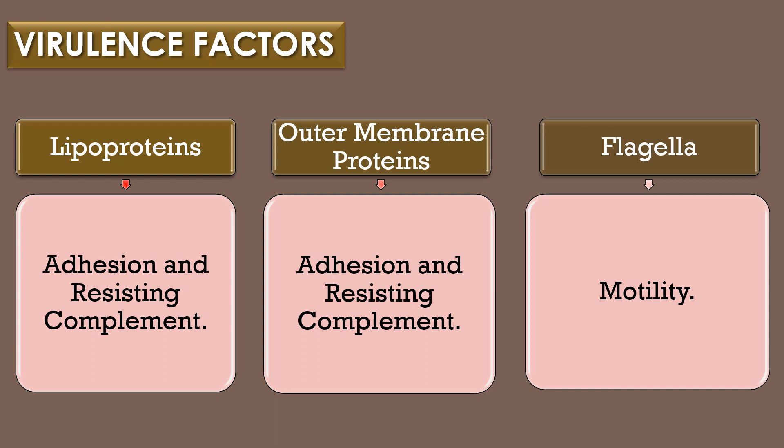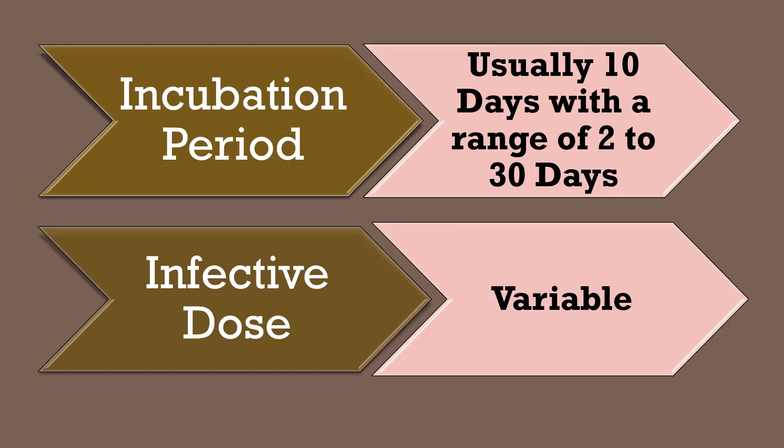The third virulence factor, flagella, supports Leptospira introgons in its motility. The incubation period of Leptospira introgons is usually 10 days, with a range of 2 to 30 days, and the infective dose required for causing an infection is variable.